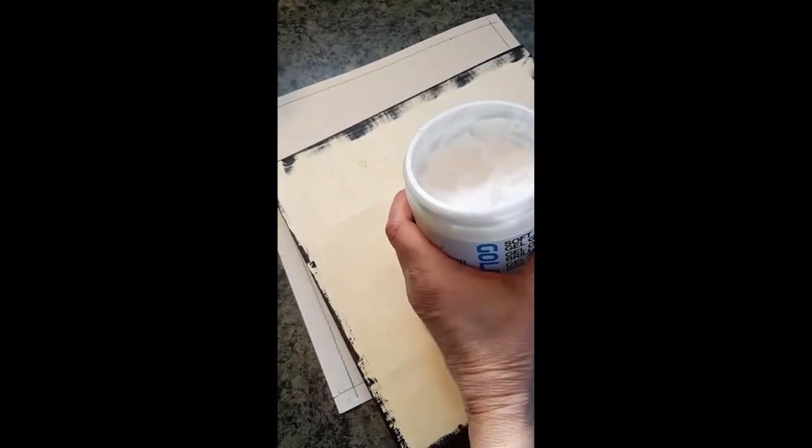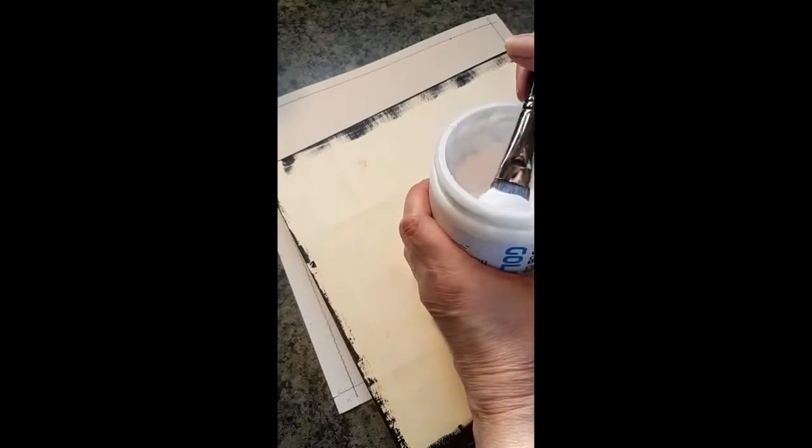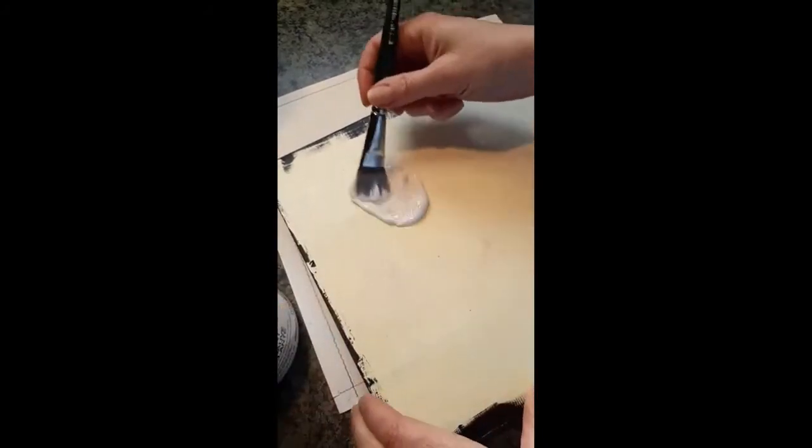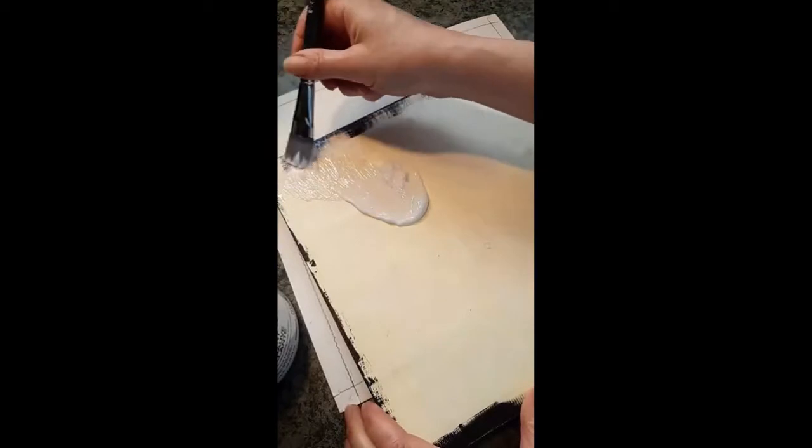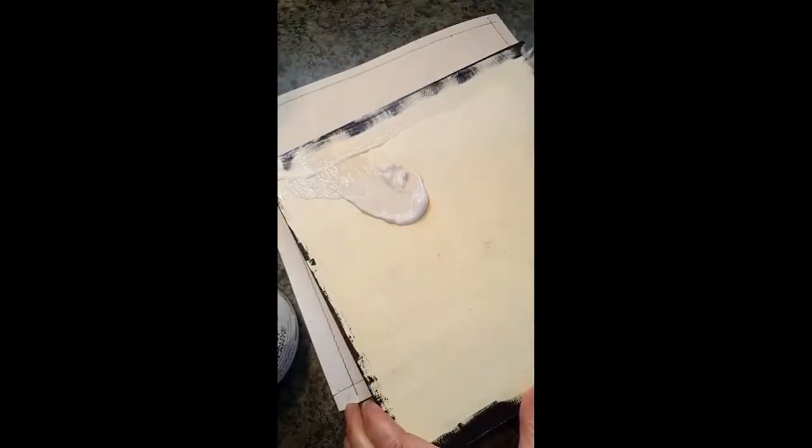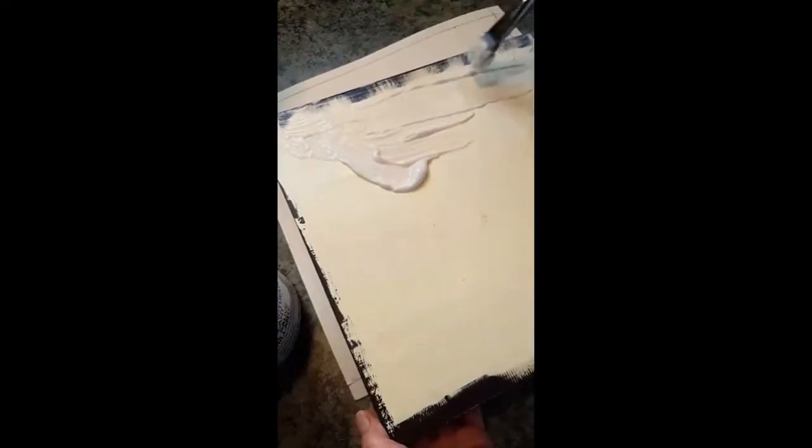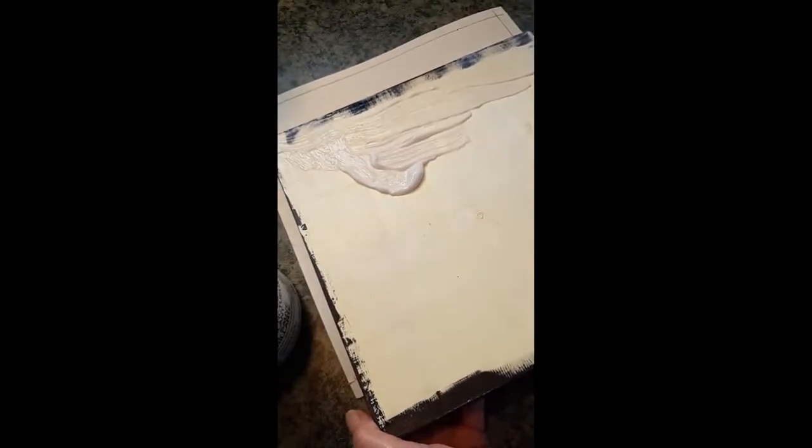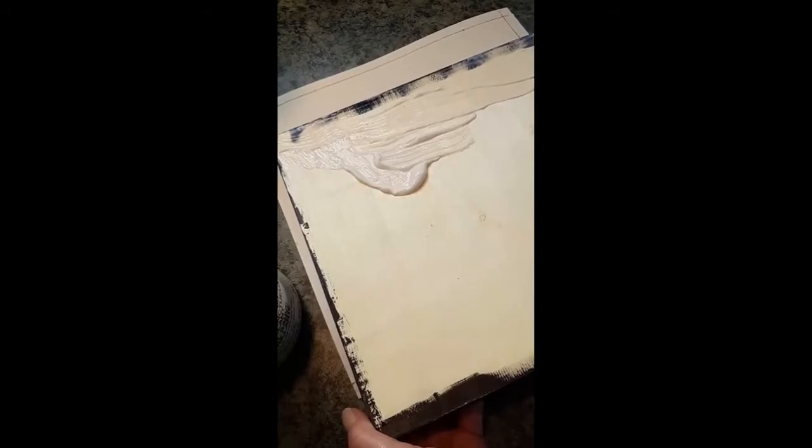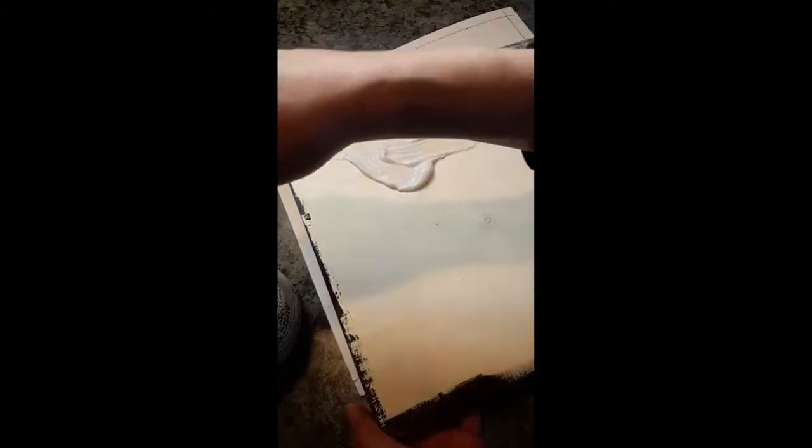This step is fairly easy. You just put a generous amount of soft gel on the back of the panel and brush it around. It's mostly important to ensure you have sufficient of this product on the sides because you don't want the product to lift, you don't want the panel to lift from the painting. So I normally put it all over.